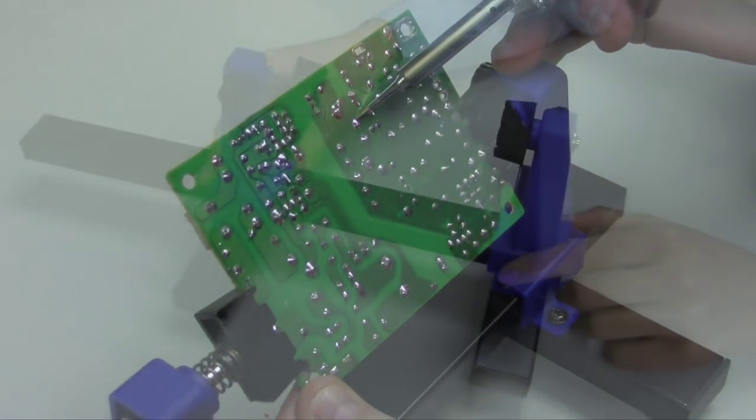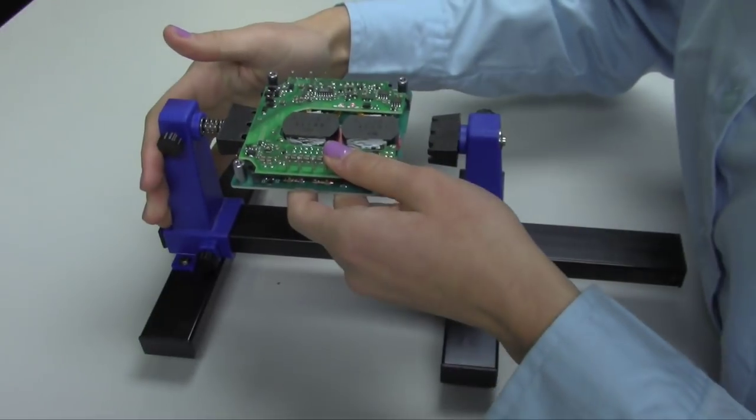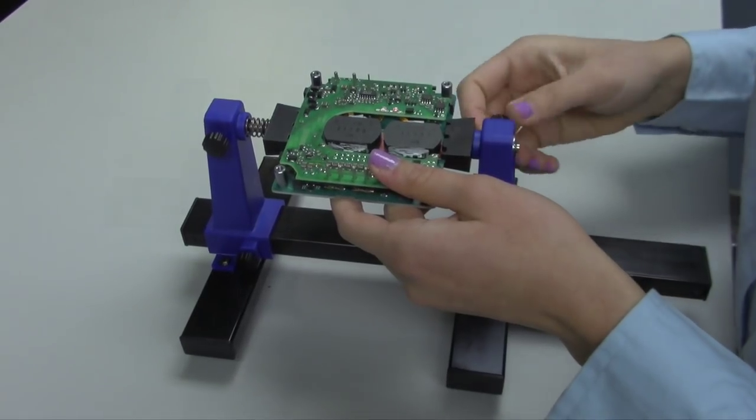To use, simply widen the jaws to the length of the board, pull back on the spring-loaded jaw, and place the board between the two grips.